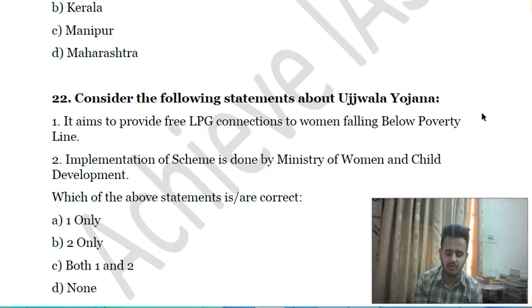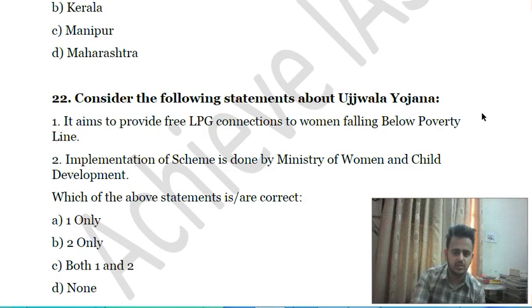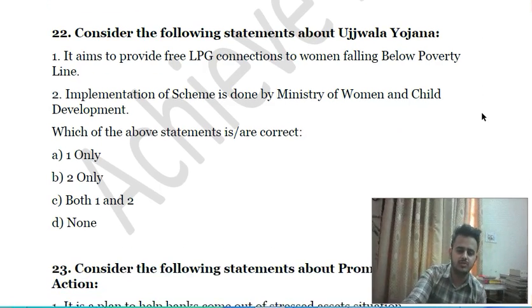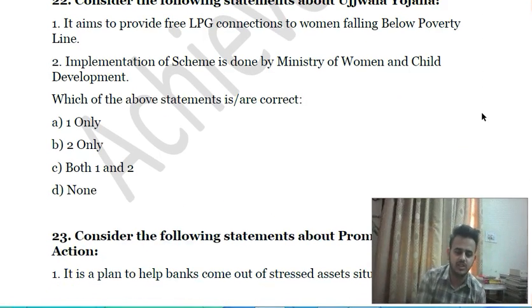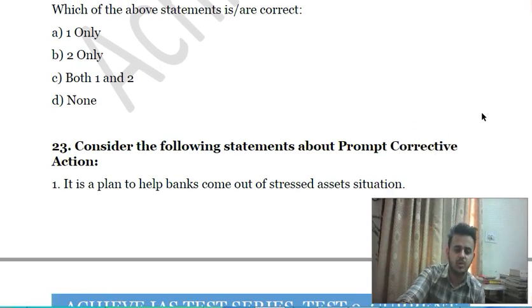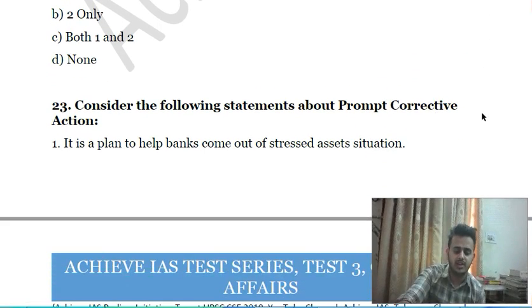Twenty-second question: consider the following statements about Ujjwala Yojana — first, it aims to provide free LPG connections to women falling below the poverty line; second, the implementation of the scheme is done by the Ministry of Women and Child Development. Choose which of the above statements is correct.